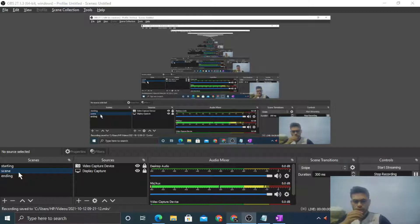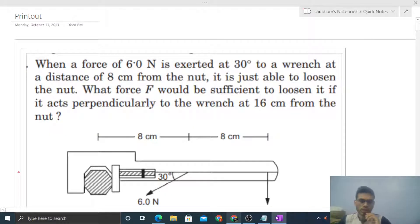Hi everyone, today let's discuss this interesting problem. When a force of 6 N is exerted at 30° to a wrench at a distance of 8 cm from the nut, it is just able to loosen the nut. What force F would be sufficient to loosen it if it acts perpendicularly to the wrench at 16 cm from the nut?